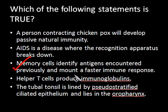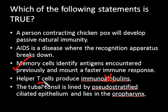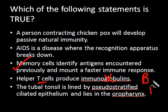But let's look at the other ones. Helper T cells produce immunoglobulins — this is false. T cells don't produce immunoglobulins. It is B cells which do that, and specifically the plasma cells within B cells. So this is a false statement.